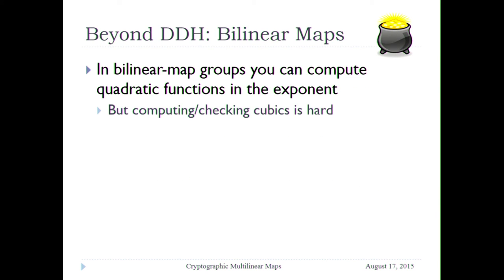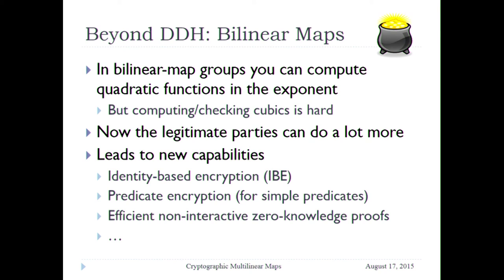Beyond DDH, in the early 2000s we learned about bilinear maps and their application to cryptography. The thing that makes them useful is that you can compute more — you can compute quadratic functions in the exponent in bilinear groups — but computing or checking cubics is hard. And once you have that, you can do a lot more. Quadratics are a lot more expressive than linear functions, so you design your protocol so that the good guys need to compute quadratics and the adversary needs to compute cubics or more. You get identity-based encryption, predicate encryption, efficient non-interactive zero-knowledge proofs.